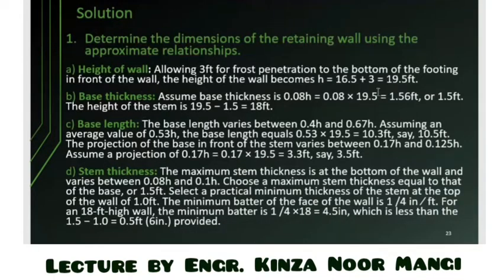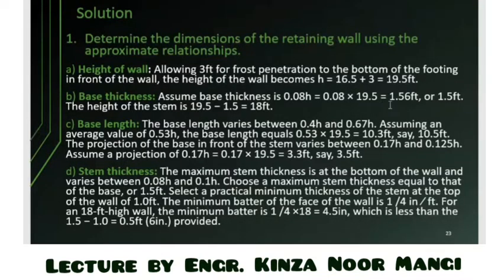The base thickness from the guideline range is taken as a minimum: 0.08 × 19.5 = 1.56 feet. We take the approximate value of 1.5 feet because it must be easily implemented in the field.